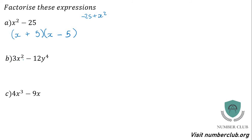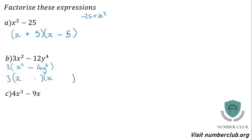This next expression looks like it might be a difference of two squares, but x squared doesn't have a perfect square root when combined with 3, so factorise first. Three is a common factor of 3 and 12. 3s into 3 go once, 12 divided by 3 is 4, giving 3(x² − 4y⁴). Now x squared is a square and 4y⁴ is a square, so apply the difference of two squares: square root of x squared is x, square root of 4y⁴ is 2y squared. That gives 3(x + 2y²)(x − 2y²).